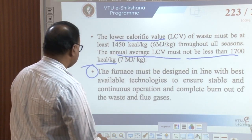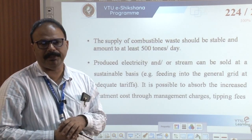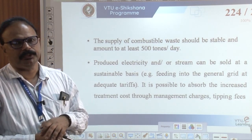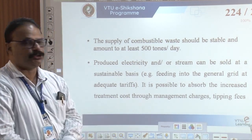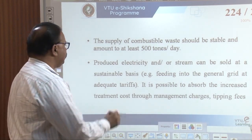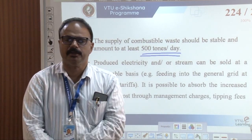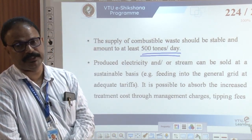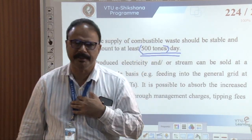Fourth and fifth design criteria: the supply of combustible waste should be stable and amount to at least 500 tons per day. We need at least 500 tons of waste per day for the furnace burning. The supply of combustible waste should not be less than 500 tons per day.